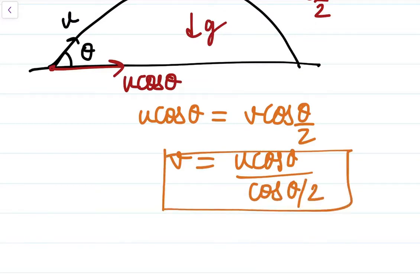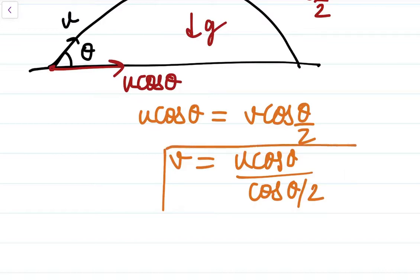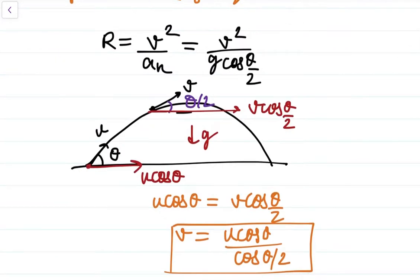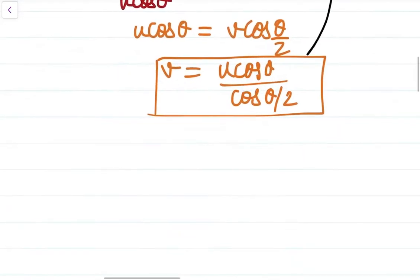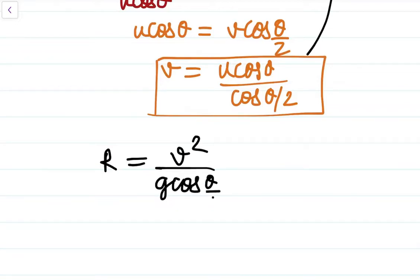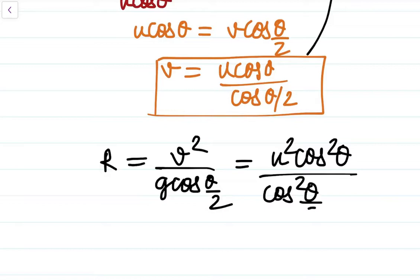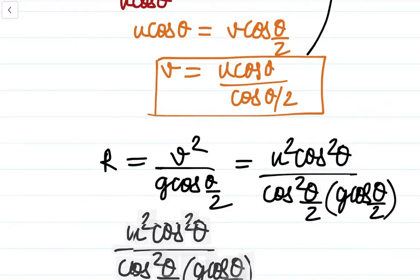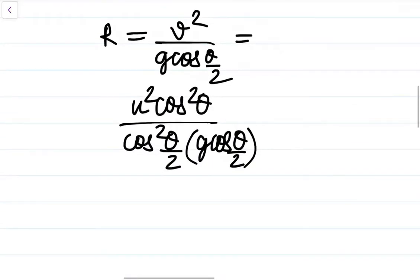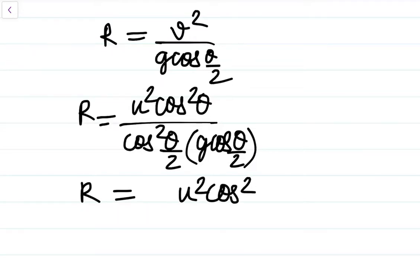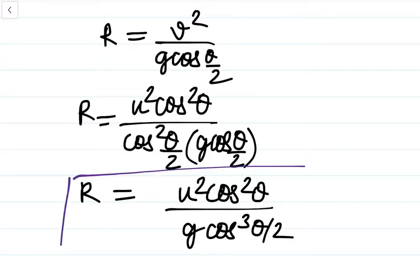Now we just substitute this value of V into the radius of curvature expression. Radius of curvature equals V squared by G cos(θ/2). V squared equals U squared cos squared theta divided by cos squared(θ/2), and G cos(θ/2) is already in the denominator. So the final answer comes out to be U squared cos squared theta divided by G cos cubed(θ/2).